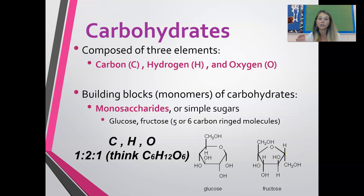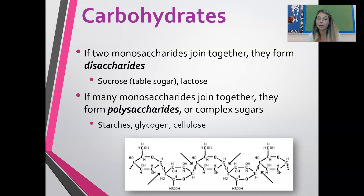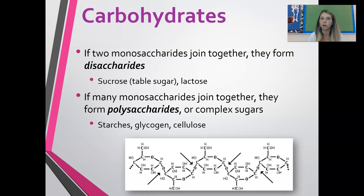You put monosaccharides together to make up complex carbohydrates — things that are made up of lots of sugars, polymers. When you put two monosaccharides together, for example sucrose or lactose, those are called disaccharides. If you put a bunch of monosaccharides together, it becomes a complex carb, or a polysaccharide. Starches, glycogen, and cellulose making up cell walls of plants are all examples of complex carbohydrates.